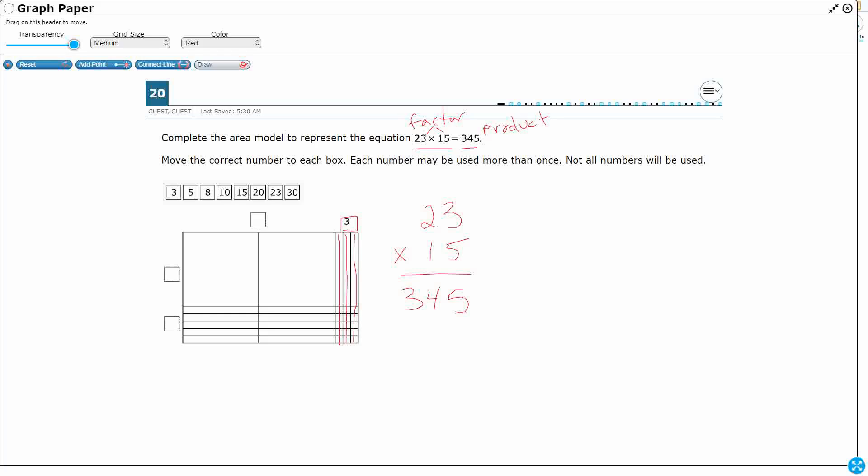So we're going to take each of these factors and we are going to split them up by place value. So let's take a look at our 23. So our 23 is going to be 20, because there's two in the tens place, plus three. Alright, that's pretty simple.